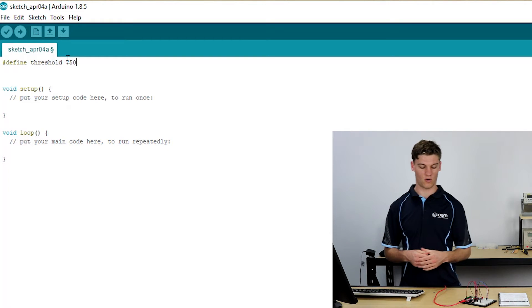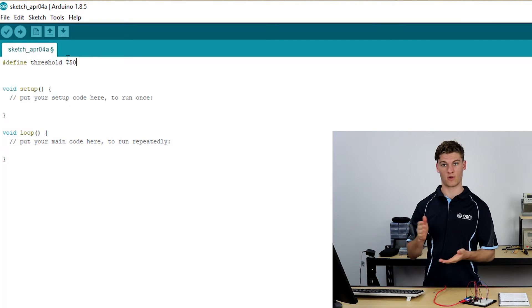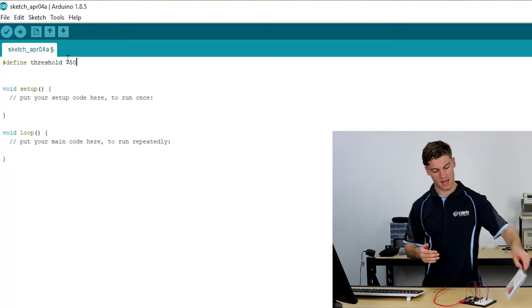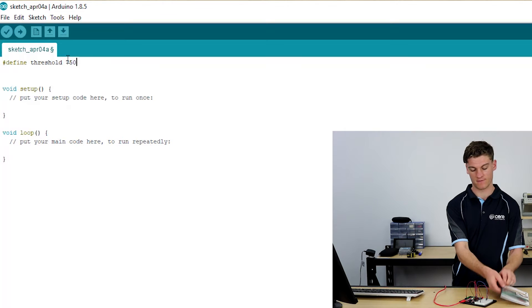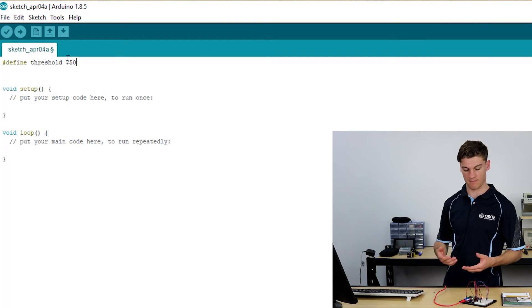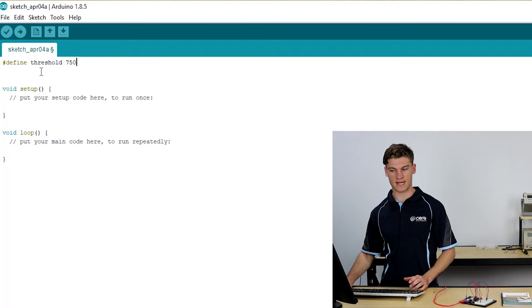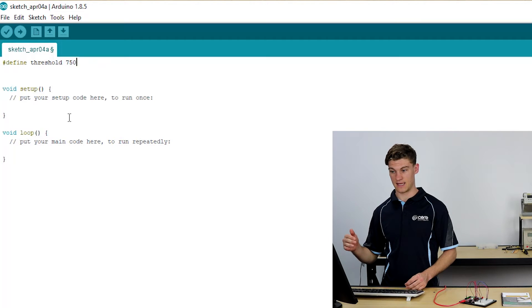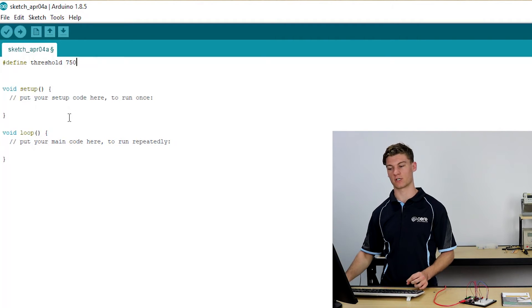So what this essentially is, is it's a reading from 0 to 1023 or 0 to 5 volts. So once it is below this threshold we will be activating the light, and once it is above this threshold we will be making sure that the LED is off. Since we're defining it outside of our functions, this constant will be visible throughout any function we choose to use.